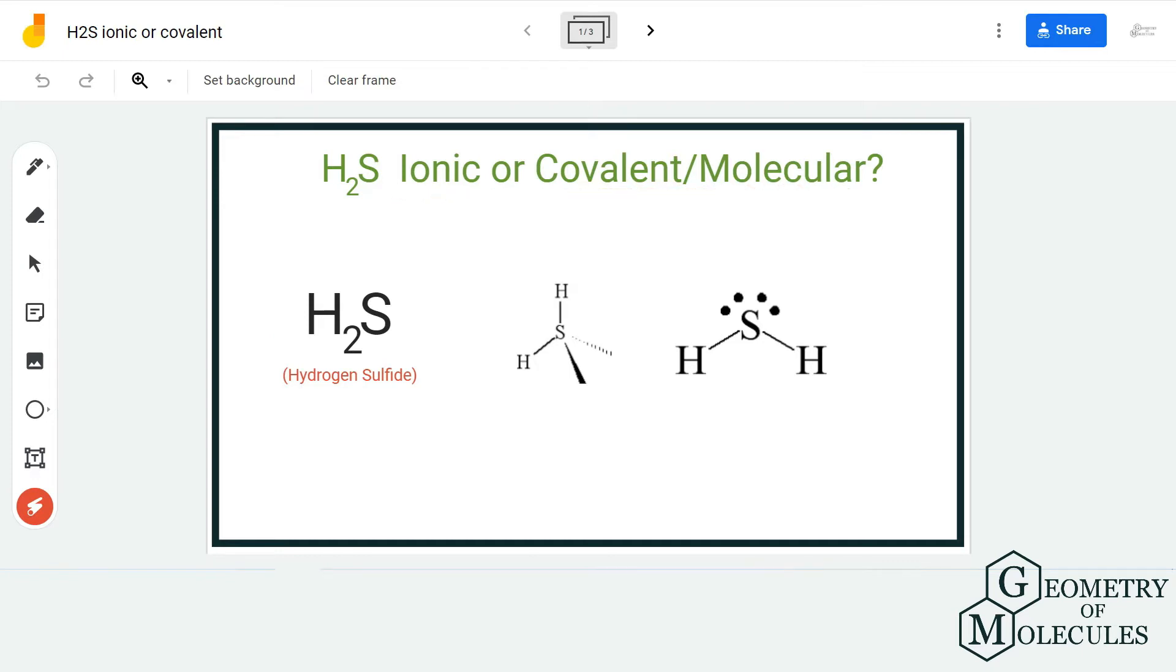to look at the Lewis structure that is present over here. You can see that the sulfur atom is forming two bonds with the hydrogen atoms. To determine if this compound is ionic or covalent, we need to look at